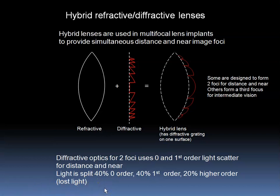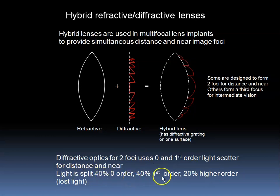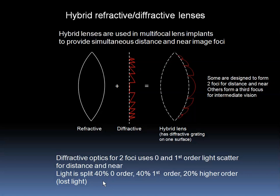Suffice to say that light is split — some of it remains for distance vision and some of it gets scattered and combines to form images for near objects. One schematic would have 40% for distance, 40% for near, and then 20% is lost. There are different variations for different designs, but in summary there is some loss of light, and this does degrade the visual acuity to a certain degree. There is also the problem that some light is always in focus and some causing blur circles, and this can be seen as halo or glare to varying degrees by different patients in different lighting situations. In other words, it is not a perfect system. However, the designs are improving over time.